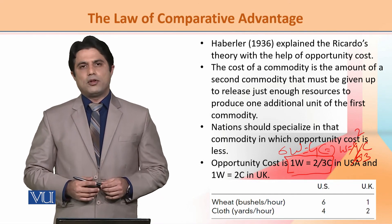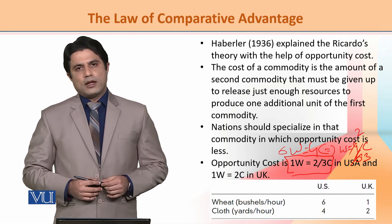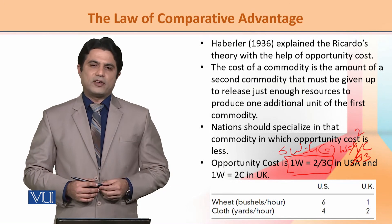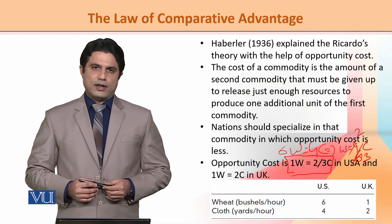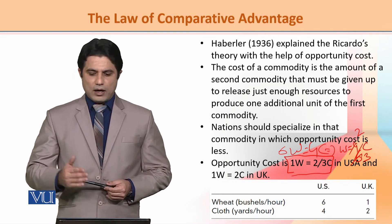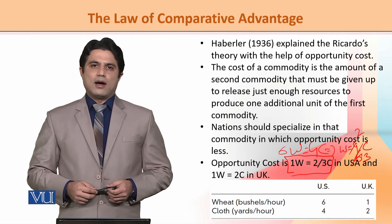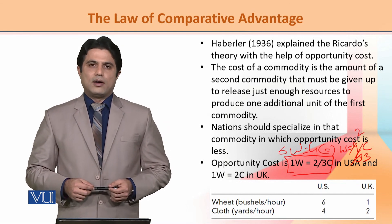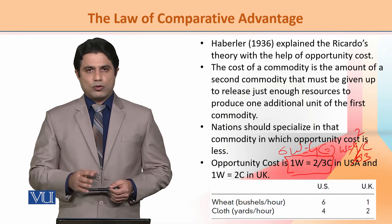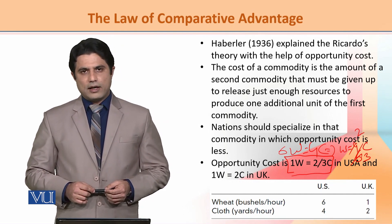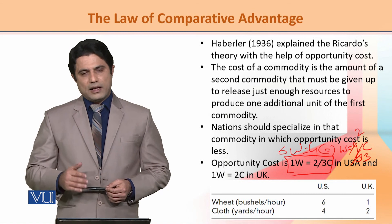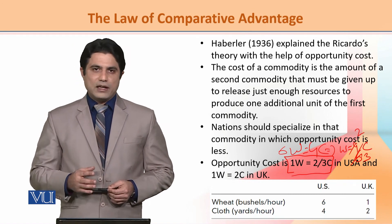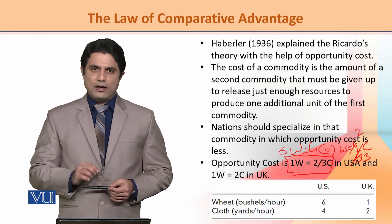We have established that the USA should specialize in wheat, because although the USA has an overall advantage in both commodities, the greater advantage is in wheat production.